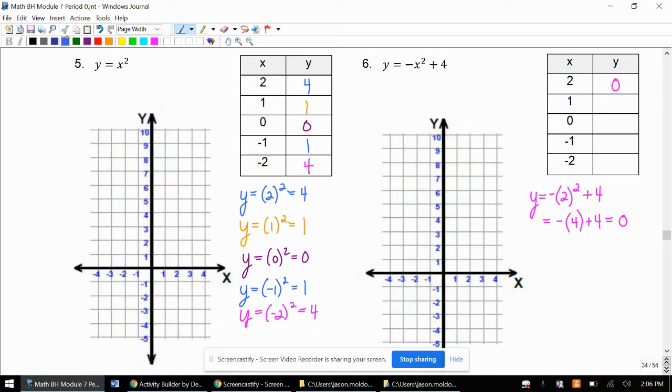We're going to plug in 1, which is take the opposite of 1 squared. Again, it's important you have correct use of parentheses, especially if you're going to type this in a calculator. If you don't have the parentheses correct, it will spit out a different answer. So 1 squared is 1. Take its opposite as negative 1 plus 4 is 3.